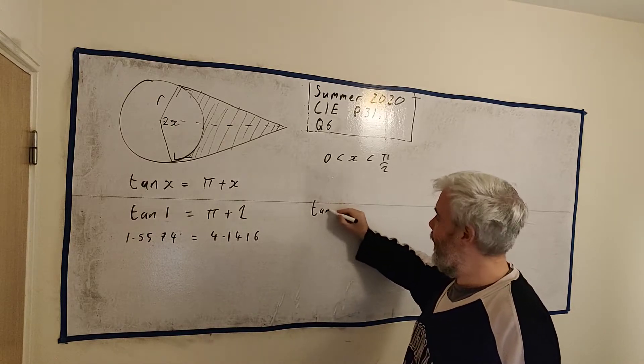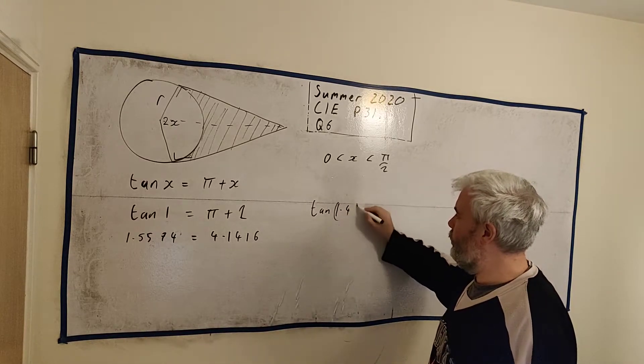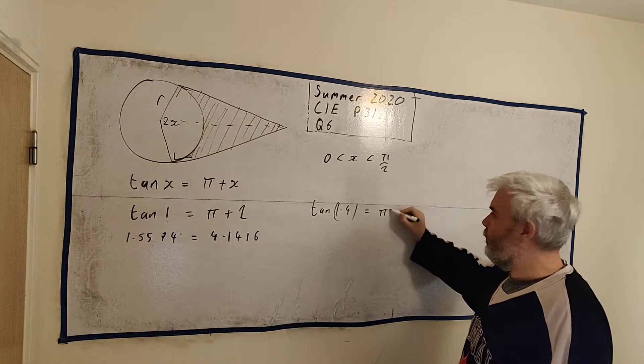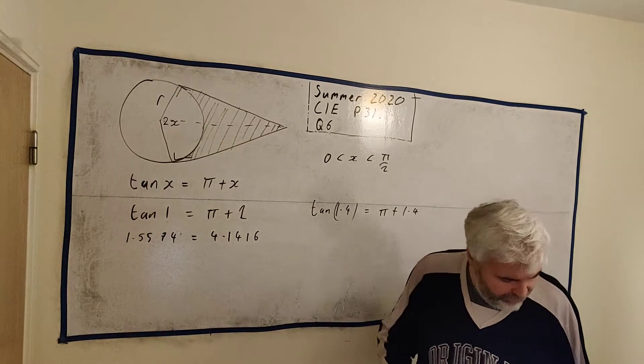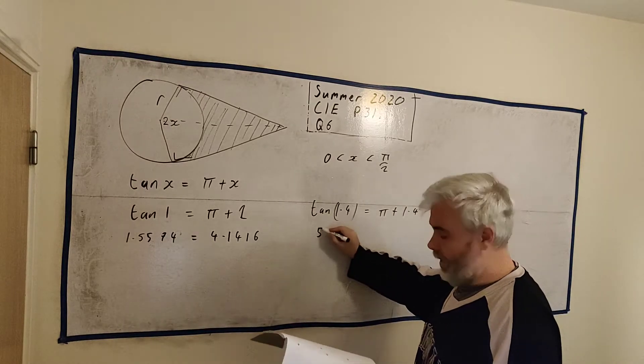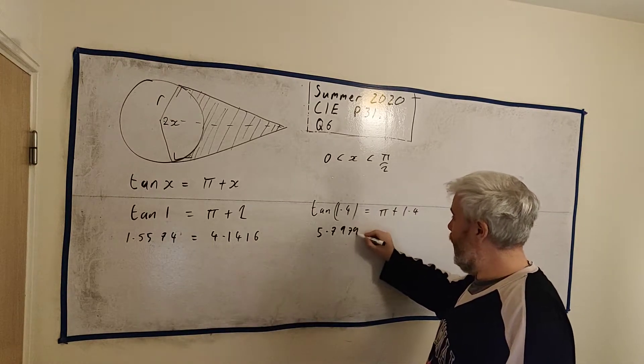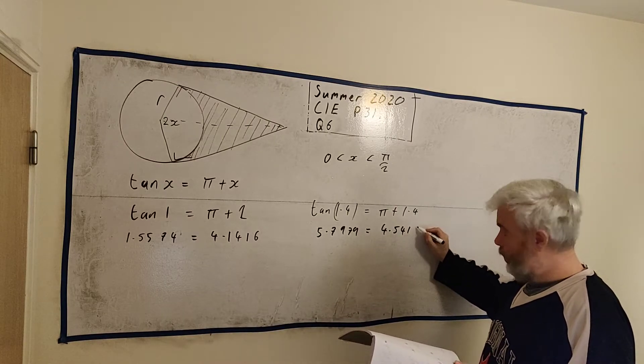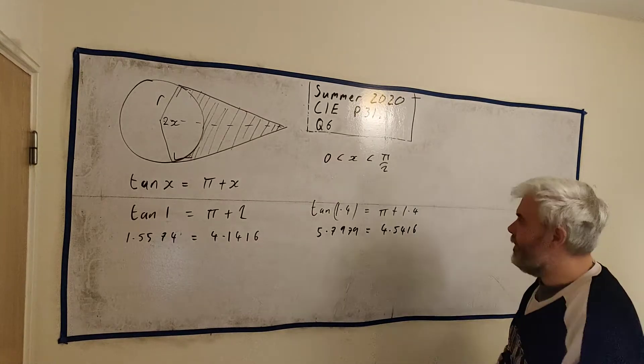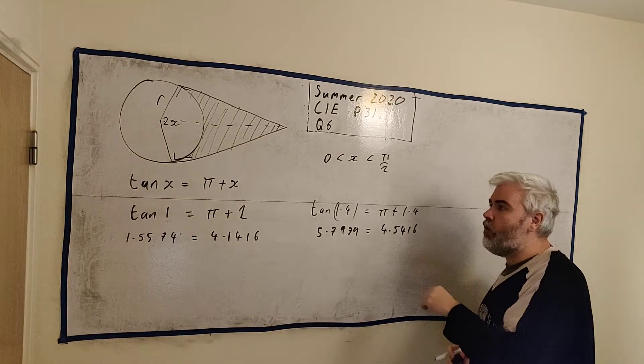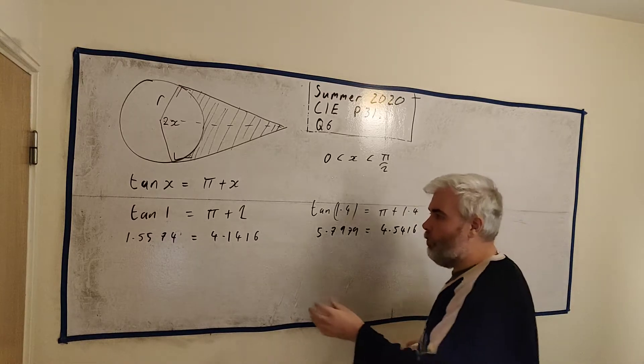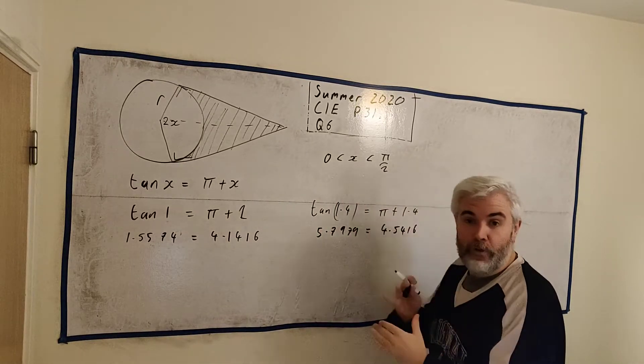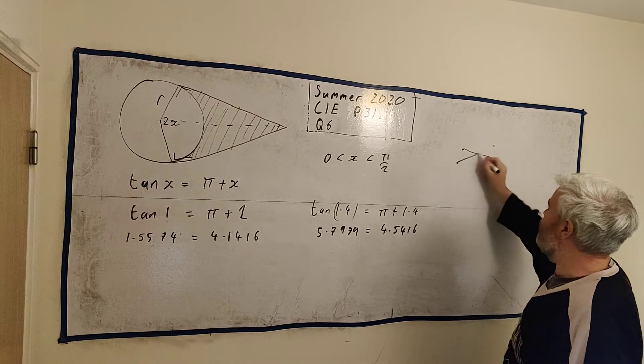Let's try the other one. Let's try tan(1.4). These are the two numbers that gave us in the question. 1 and 1.4. tan(1.4) equals pi plus 1.4. If we put that in, let me go back to my notes again, we will get 5.7979 equals 4.5416. Again, this is clearly not right either, but we now know the answers between 1 and 1.4. Have a look why. This number is less than this one. This number is bigger than this one. They must have crossed somewhere. The correct answer must be somewhere here in the middle.